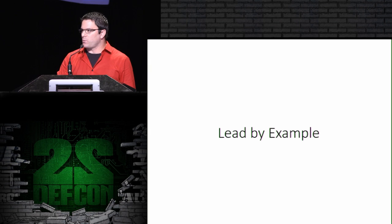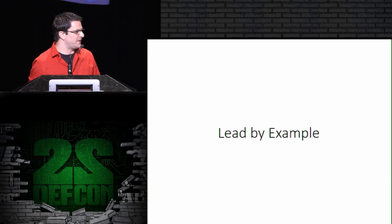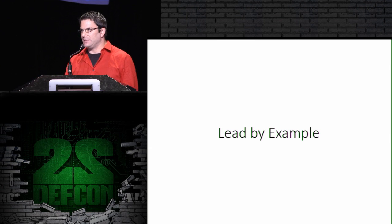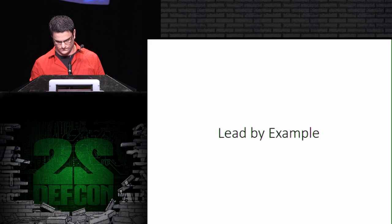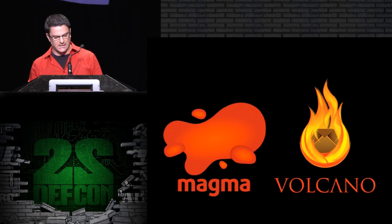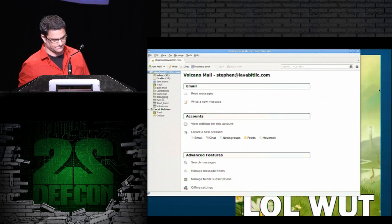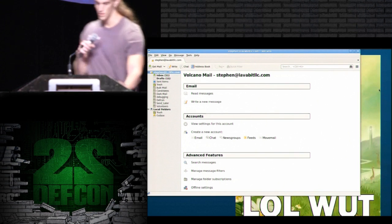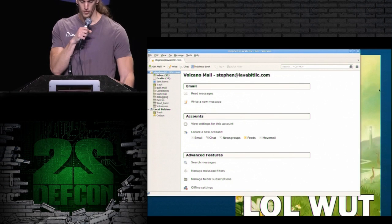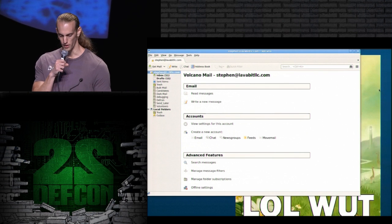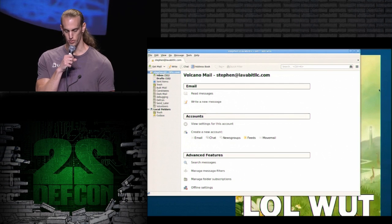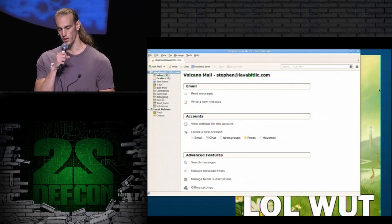I've decided I don't just want to create a specification and hope the world listens to me. I think the best way to prove that DIME is secure and functions is to build it. So I'd like to introduce Magma and Volcano: Magma is the server implementation and Volcano is the client. We're going to do a quick visual demonstration. What you're going to see right now is Volcano, the thick client we've been working on, which is essentially a Thunderbird fork.